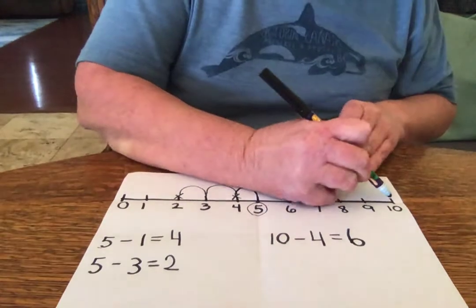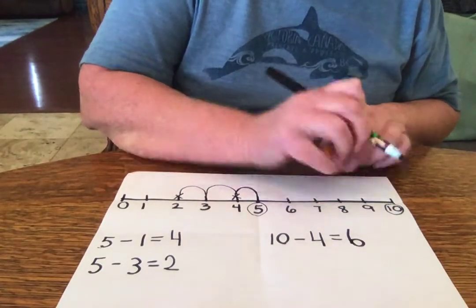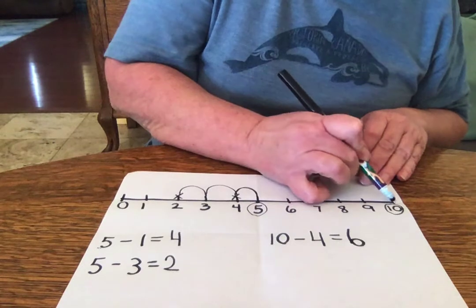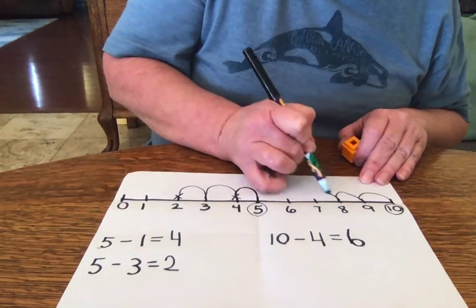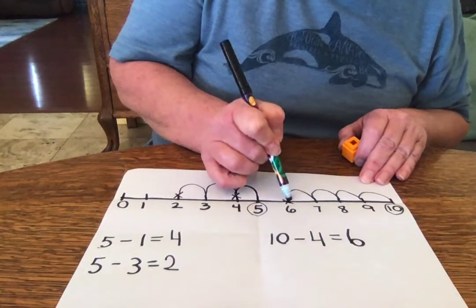Okay, so that's right. You start here, I circle my 10. That's where I started and I jump 4. 1, 2, 3, 4. And I put an X on 6.